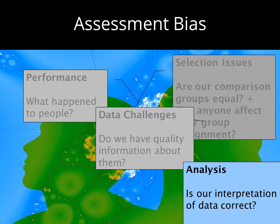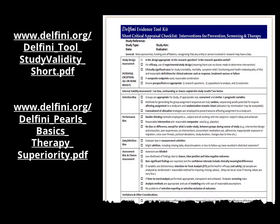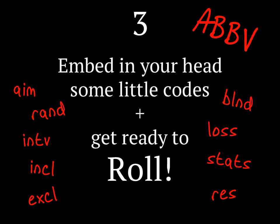Assessment bias is all about evaluating the results. Get familiar with your tool, because now we're going to rock and roll. What you want to do is have in your head some abbreviations for key critical appraisal considerations, because we're going to show you how to take your study, do a markup on it, and speed things along. For example: AIM is already short and easy, RAND for randomization, INTV for intervention, et cetera. Have little abbreviations for all the critical appraisal elements you want to look for.